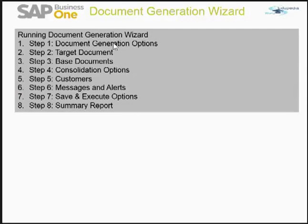The Document Generation Wizard enables you to generate batch processing of sales documents. The wizard guides you step by step through the definition of the parameters required to generate the documents. The first step is generating documents using the wizard for target documents according to an existing parameter or a new parameter set.